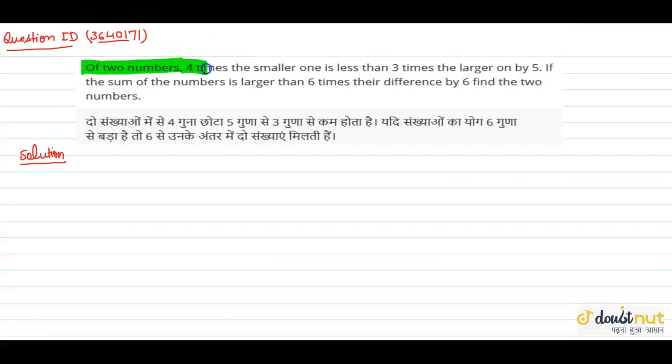Of two numbers, four times the smaller one is less than three times the larger one by five. We don't know which one is smaller or larger, so first we will note which one is larger and which one is smaller.